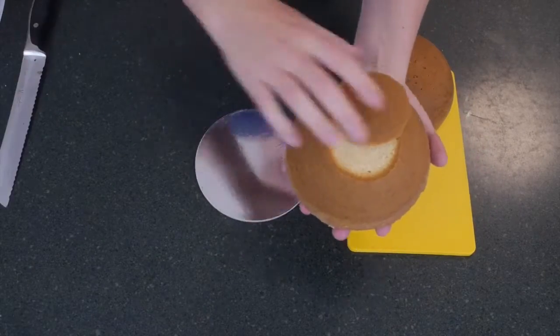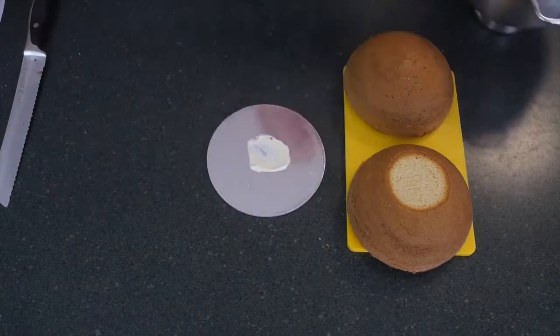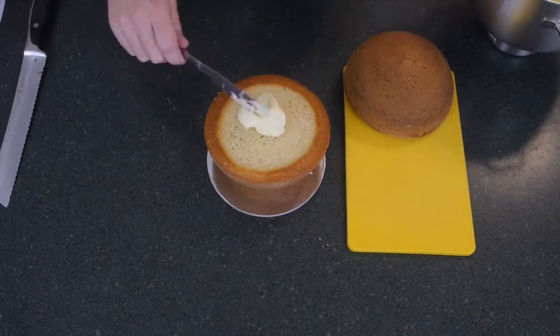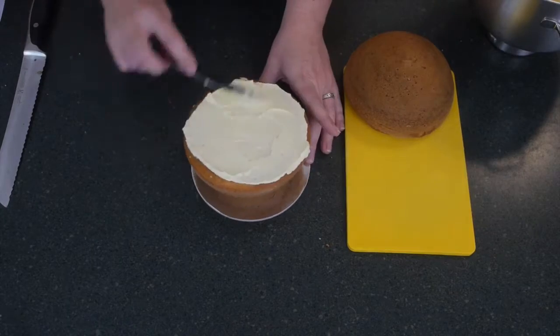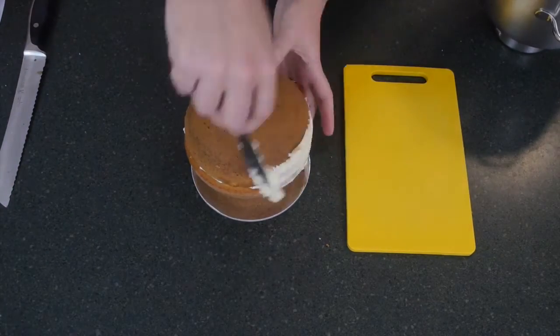So I have started with two semi-circle cakes which you make using the Wilton ball cake pan. Then I have trimmed off the bottom of one to make it sit nice and flat on a cake board. I am then layering it with some buttercream.